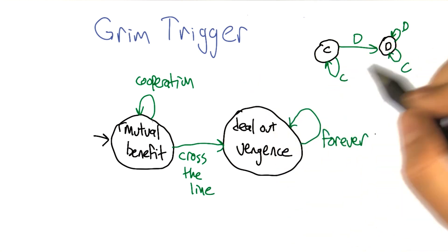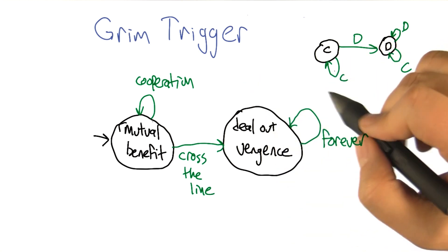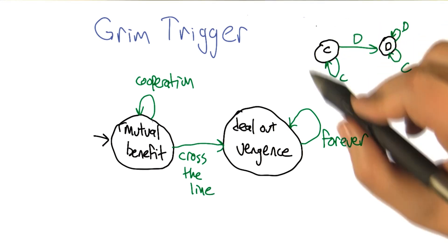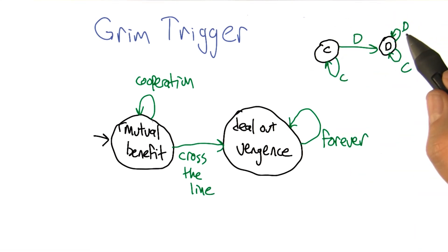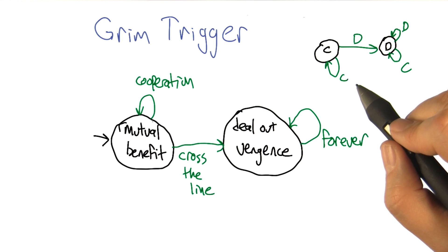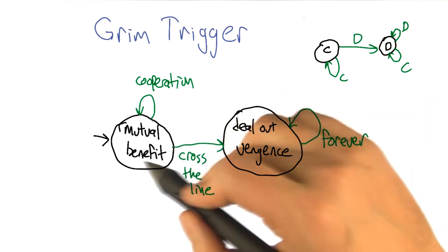Right, so the whole purpose of this is to create a Nash equilibrium kind of situation, right? Where if I'm playing this strategy, and you're playing this strategy, then neither of us has any incentive to cross the line. And so we're just going to continue to cooperate.